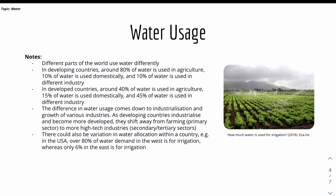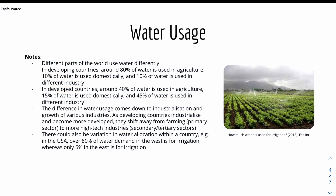Next is water usage. Different parts of the world use water differently, and there are different water mixes — the percentage used in certain industries and domestic use. In developing countries, around 80% of water is used in agriculture, whereas 10% is used domestically and 10% in industry. In developed countries, around 40% of water is used in agriculture, 15% domestically, and 45% in different industries, for example manufacturing.